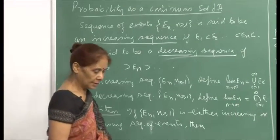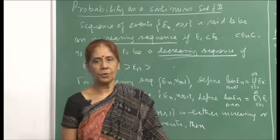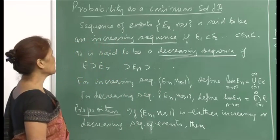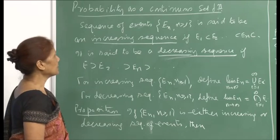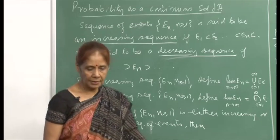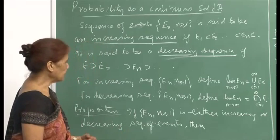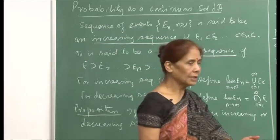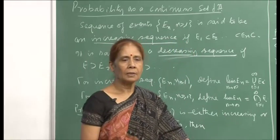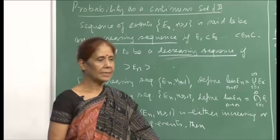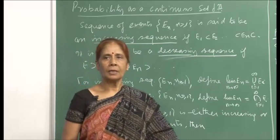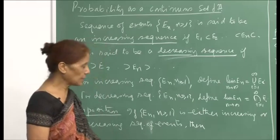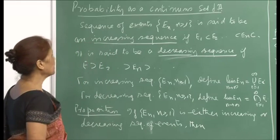We have already come across the notion of continuity of a function on the real line. Now we want to introduce the concept of the probability function as a continuous set function. This is very useful because often when we take limits of sequences of events, we need this notion to interchange the limit and the probability.